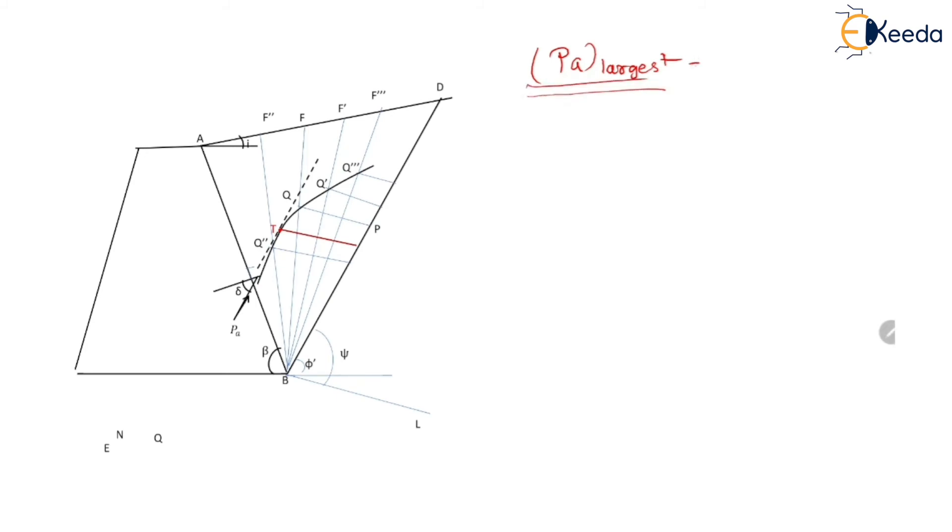And this largest active pressure is equal to Coulomb's active pressure. And the actual plane passes through this point T. So if we connect point BT and if we extend it further up to the surface AD, then this red line indicates the actual failure surface.